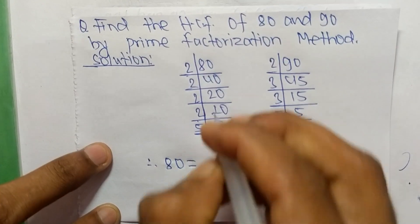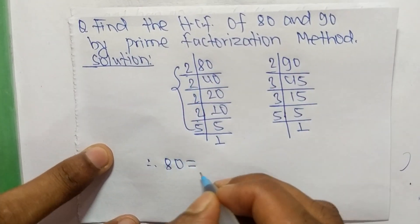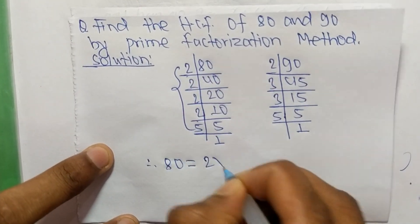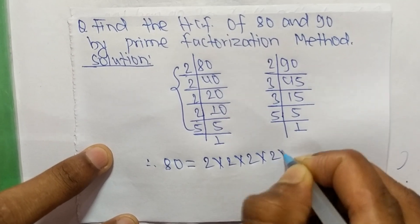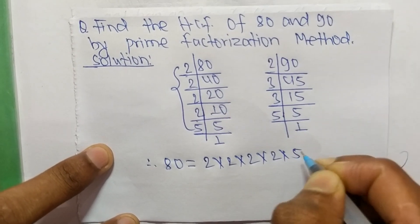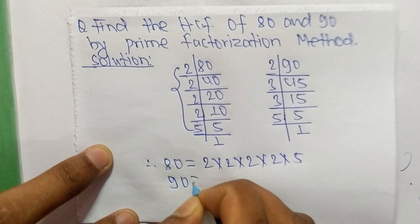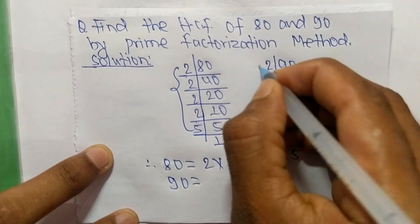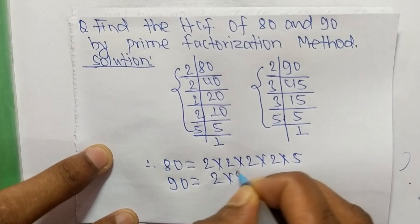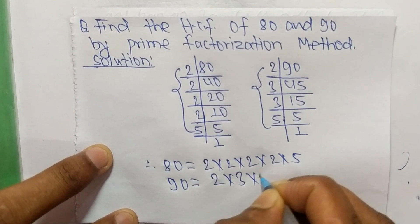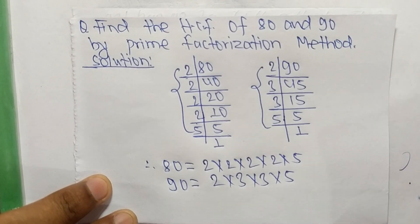From these prime factors, we can write: 80 is equal to 2 times 2 times 2 times 2 times 5. Likewise, 90 is equal to 2 times 3 times 3 times 5.